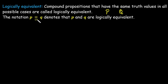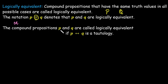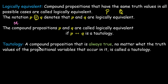When two statements are logically equivalent, we represent it with a special symbol. Apart from the truth table, there is another definition: two compound propositions P and Q are called logically equivalent if we take the biconditional between these two statements and that biconditional is a tautology.